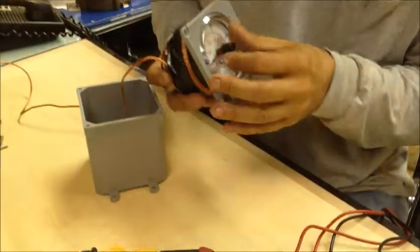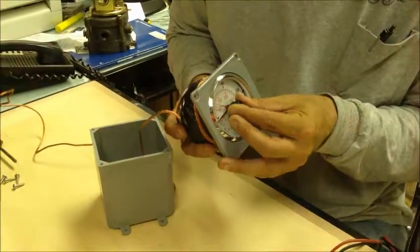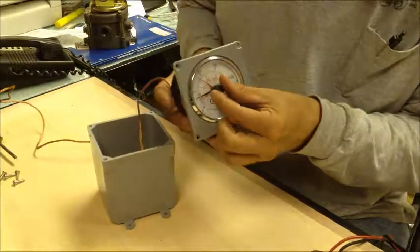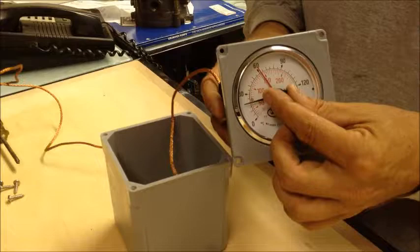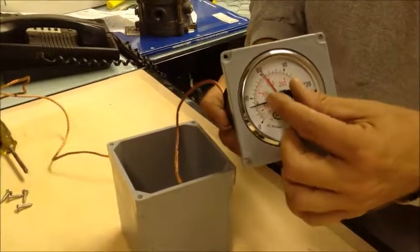So usually we wire these temperature switches normally open and we set the action level, you know, somewhere around, if it's like an SV system, we usually put them around 140 degrees because we don't want them to melt the PVC.